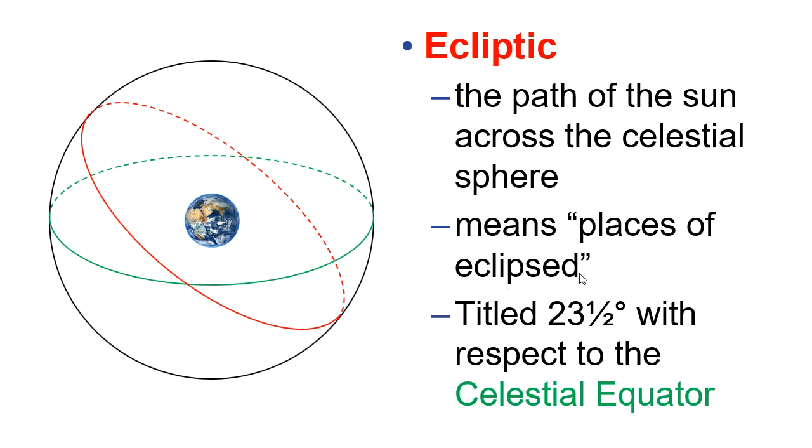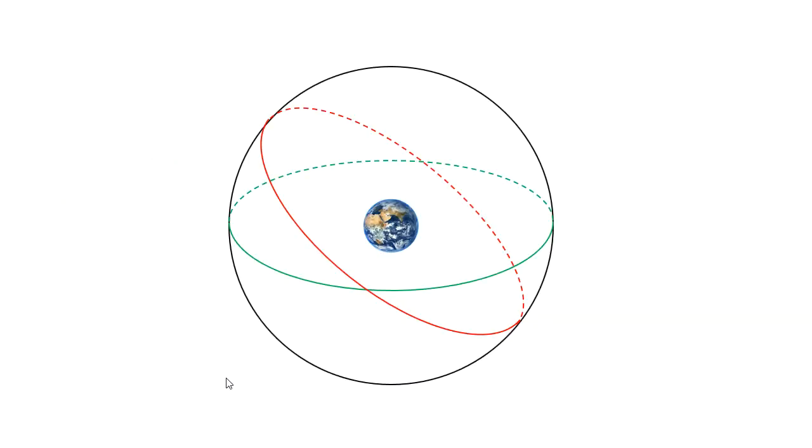It's a little typo right here. This second bullet should say ecliptic means places of eclipses. So our ancestors noticed that the solar and lunar eclipses would always occur in these dozen or so constellations around the ecliptic. They would always occur in the same collection of constellations.